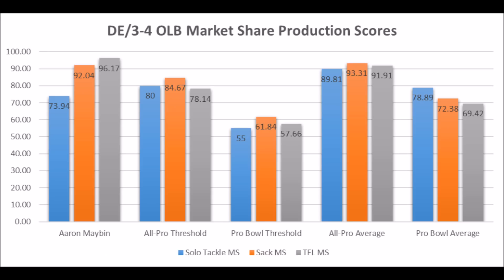The biggest thing to understand about Aaron Maben is that he was productive. He had a 73.94 solo tackle score, a 92.04 sack score, and a 96.17 tackle-for-loss score. When you look at his production data, he definitely has traits indicative of a pro bowl player, with very strong sack and TFL totals.